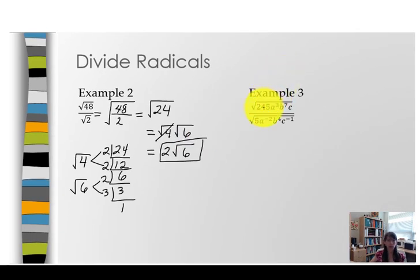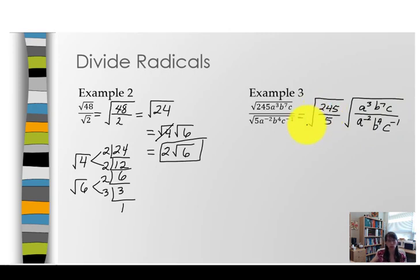In our last example, we have numerical bases and variable bases. So the first thing I'm going to do is break apart the variables from the numerical portion. That would give me 245 divided by 5 for one radical, and then the other radical will have all of our variables: a cubed, b to the 7th c, divided by a to the minus 2, b to the 4th, c to the minus 1. So starting with the numerical portion, 245 is divisible by 5 evenly, and that gives us the square root of 49, and that would be 7. That completely clears the radical.